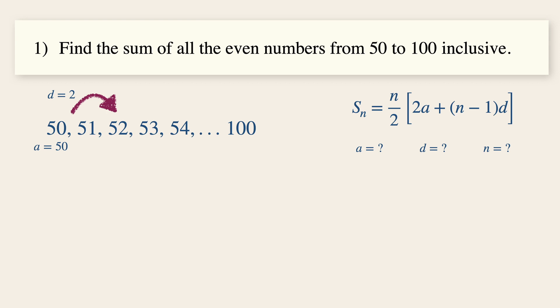The next part is to determine the number of even terms between 50 and 100 inclusive. This can be a bit tricky. If we are not sure how to do that, let's imagine the numbers 1 to 10. There are 5 even numbers, or by taking 10 divided by 2, which is 5.